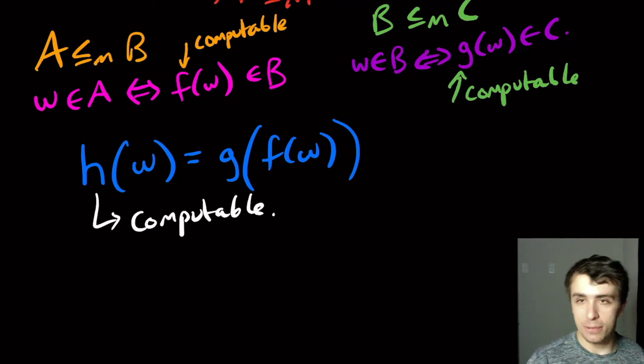and G of whatever is computable, because I can just feed the output of the F guy into the input of the G one, and the G one is computable too.